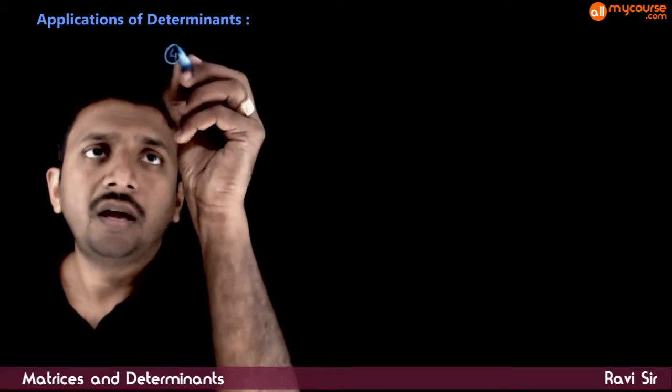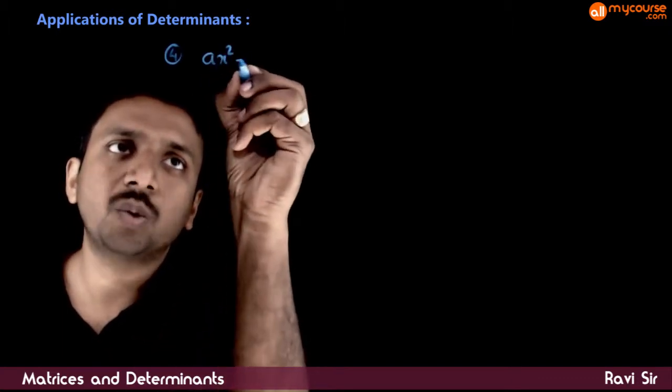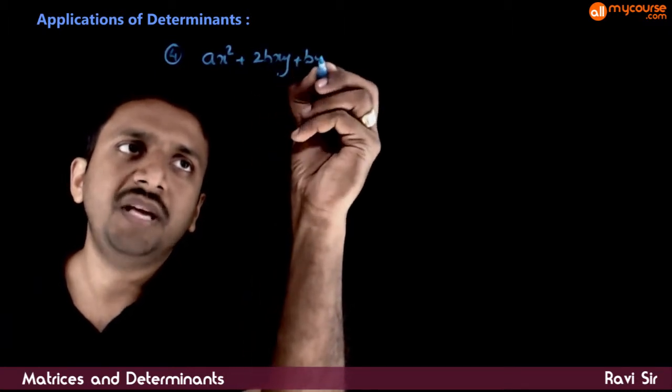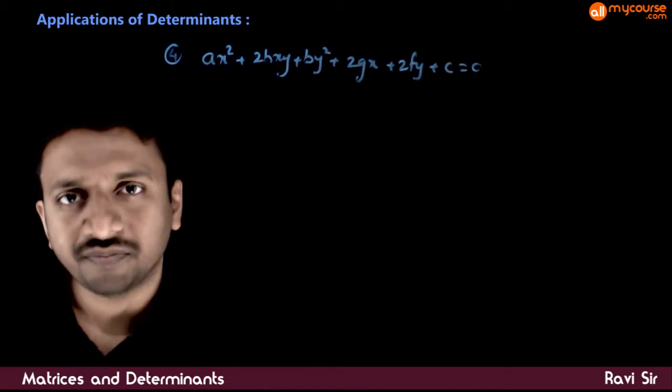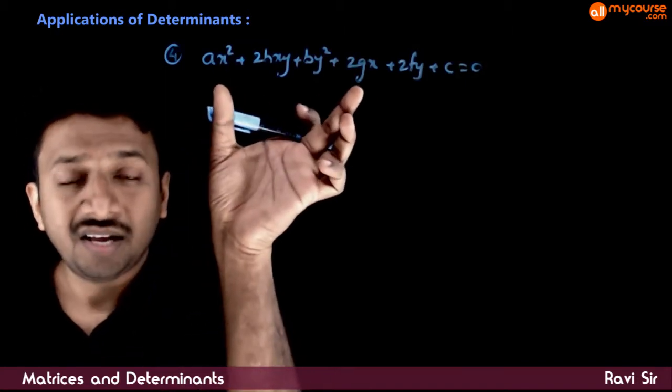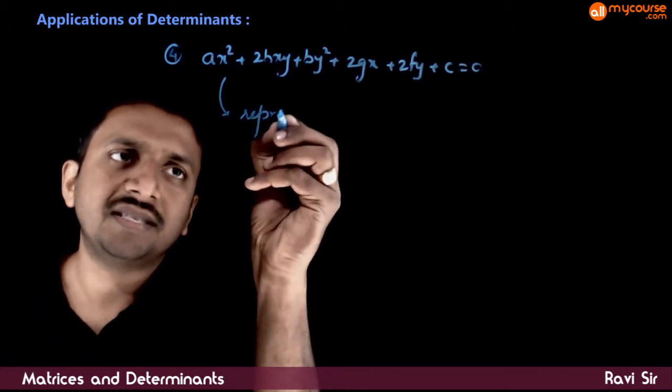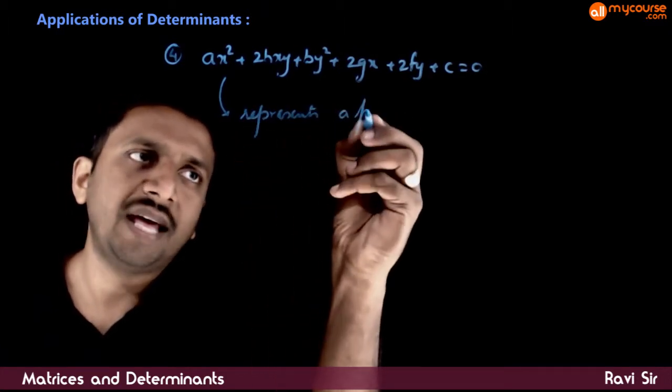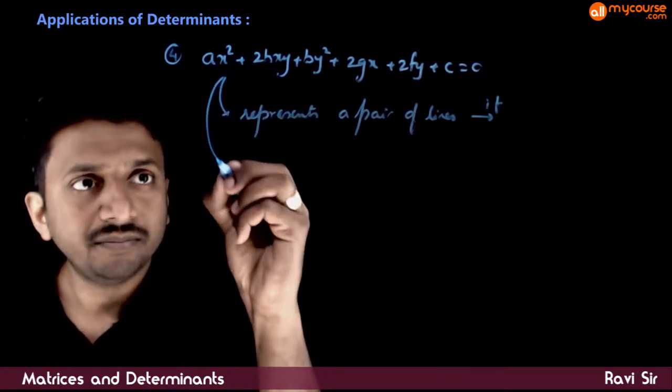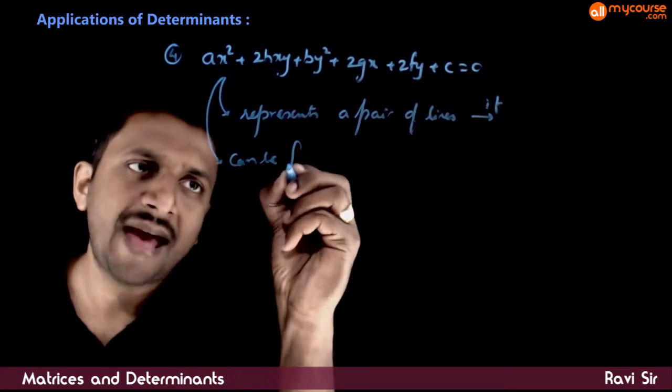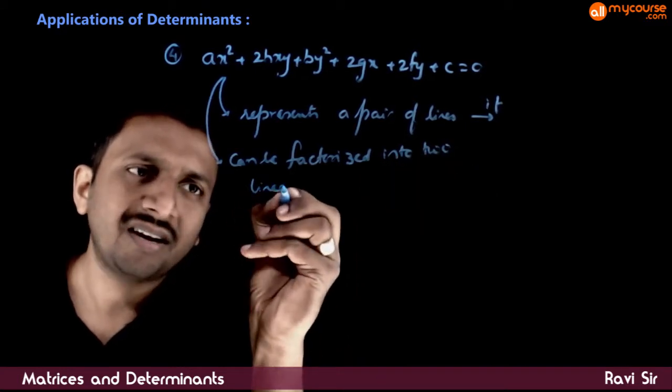Next, if you have a general second degree equation in x and y, that is, an equation of the form ax² + 2hxy + by² + 2gx + 2fy + c = 0 - a general second degree non-homogeneous equation in two variables x and y.